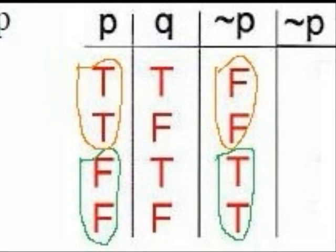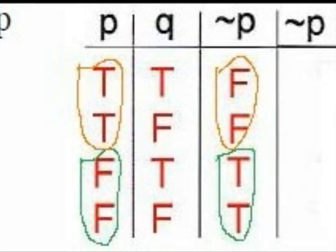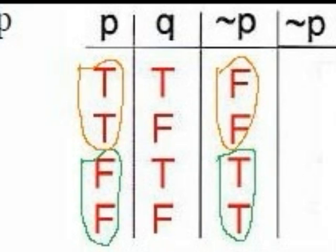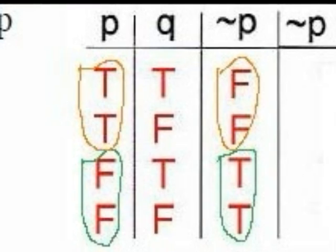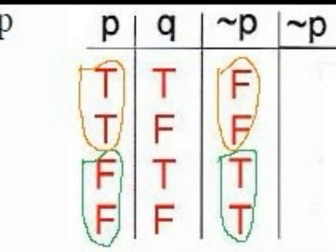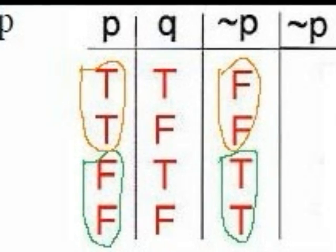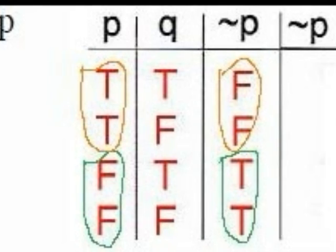Now, to complete the truth table, we complete each column as we move from left to right. The next column is NOT P, or the negation of P. The negation of P has the opposite truth value of P. So since P is true, true, false, false — NOT P is false, false, true, true.